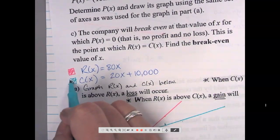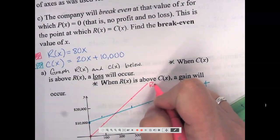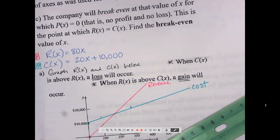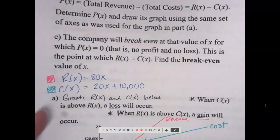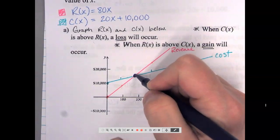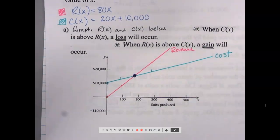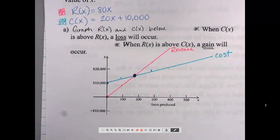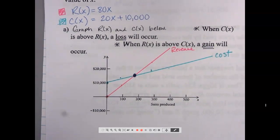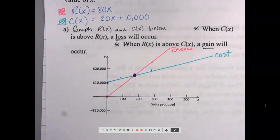This is my cost and this is my revenue — money in, money out. Clearly they do meet and intersect somewhere around here. I don't know exactly where yet, but that intersection is my break-even value — where the money coming in and going out are exactly the same. I'm not making money, but I'm also not losing money. It looks like it's a little less than 200, but let's find it exactly.